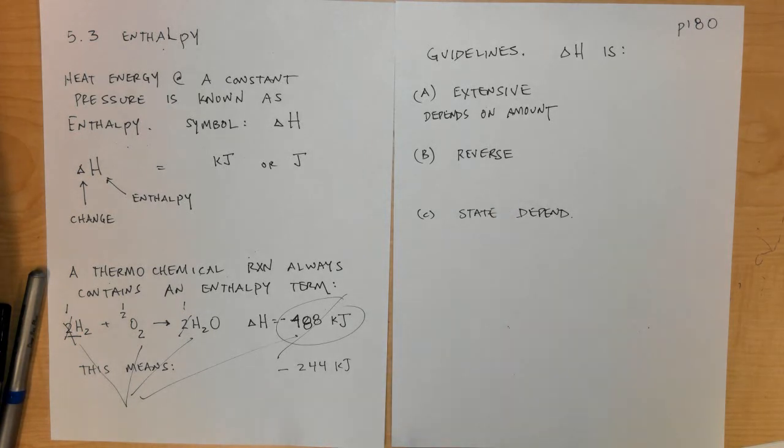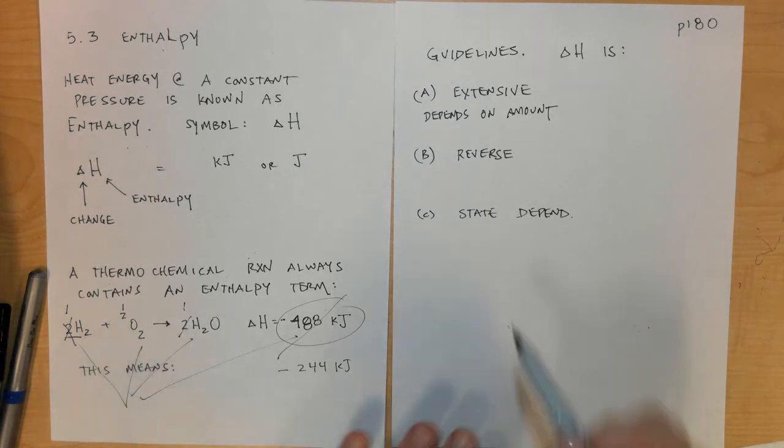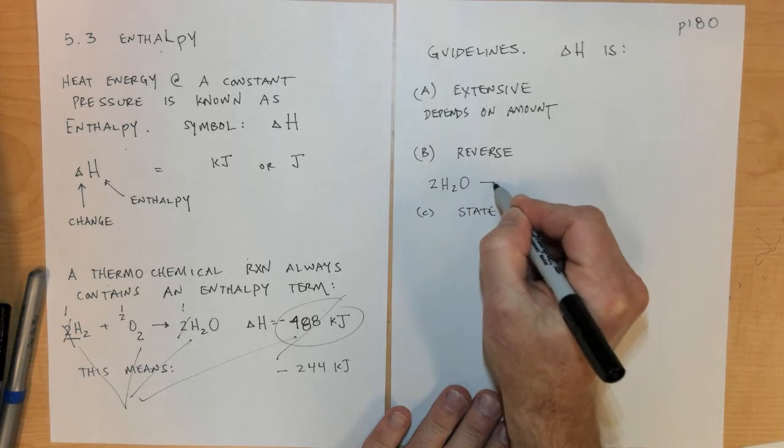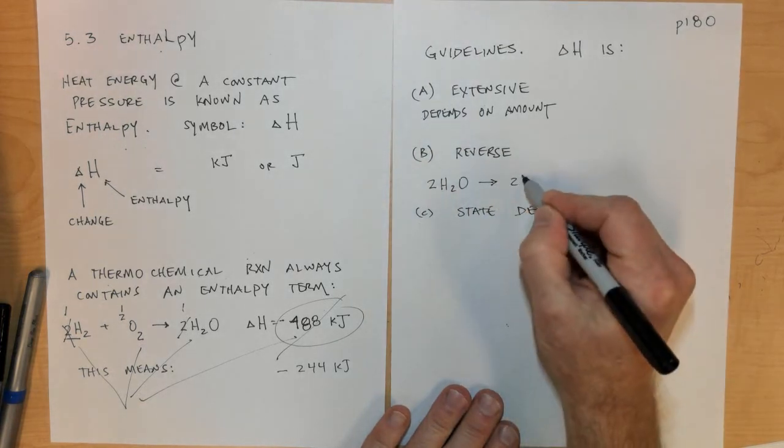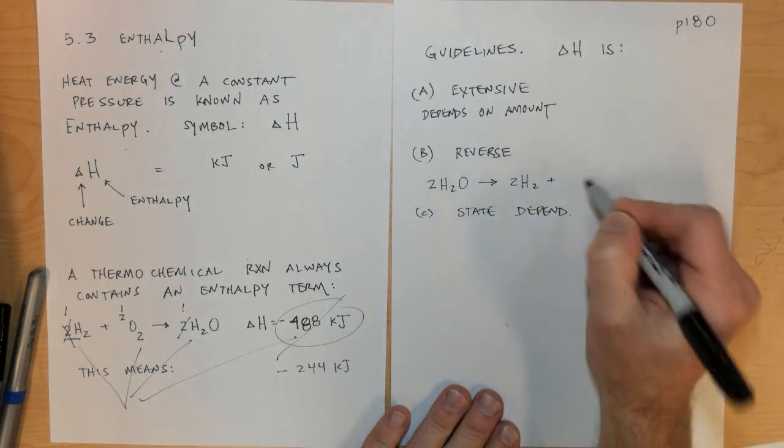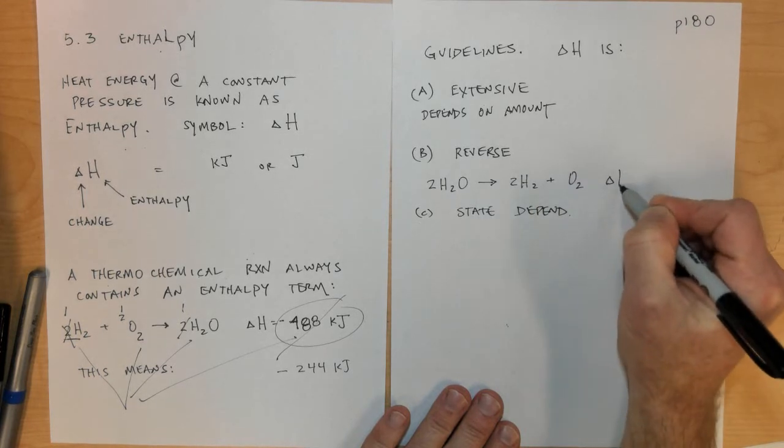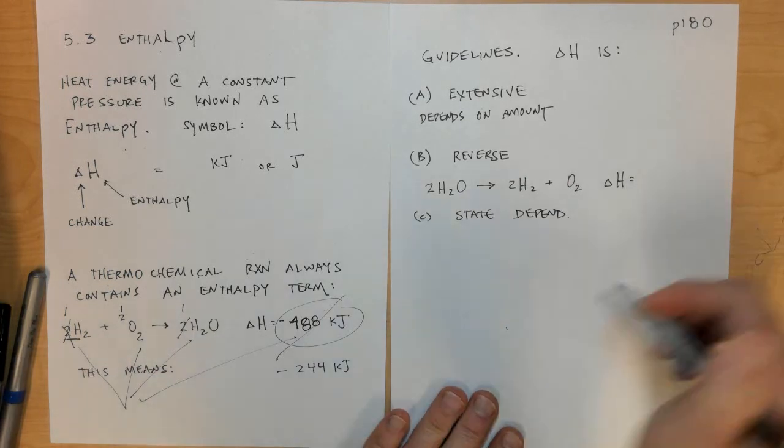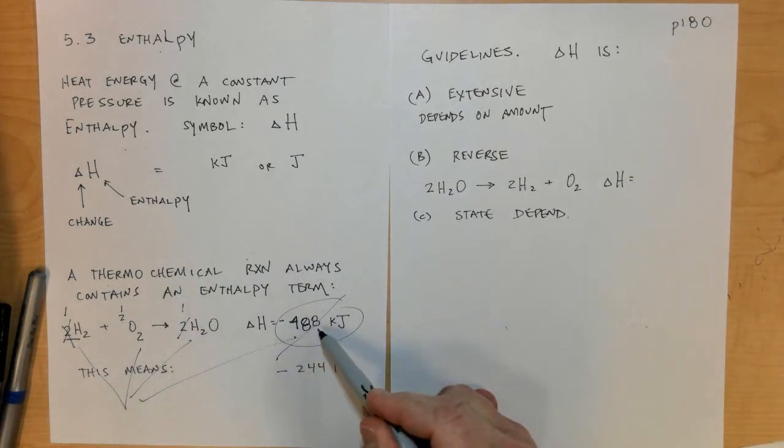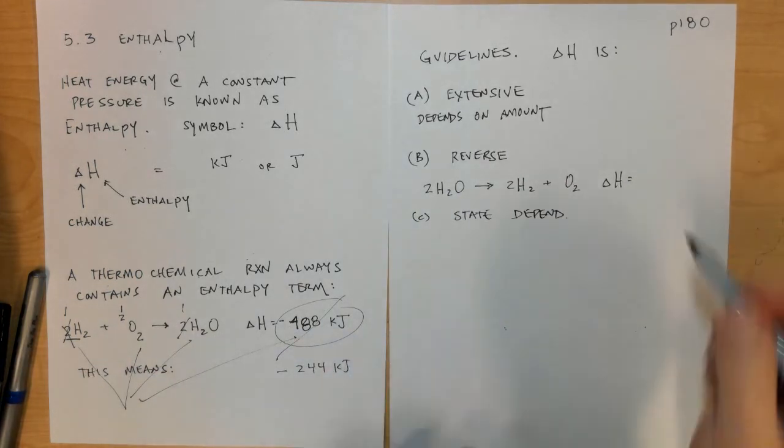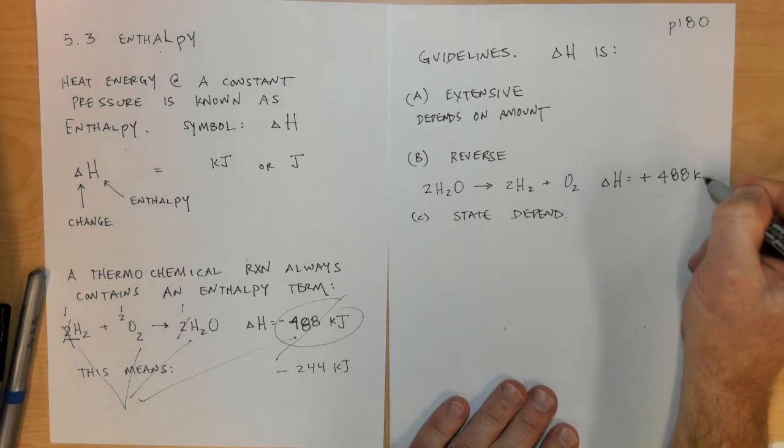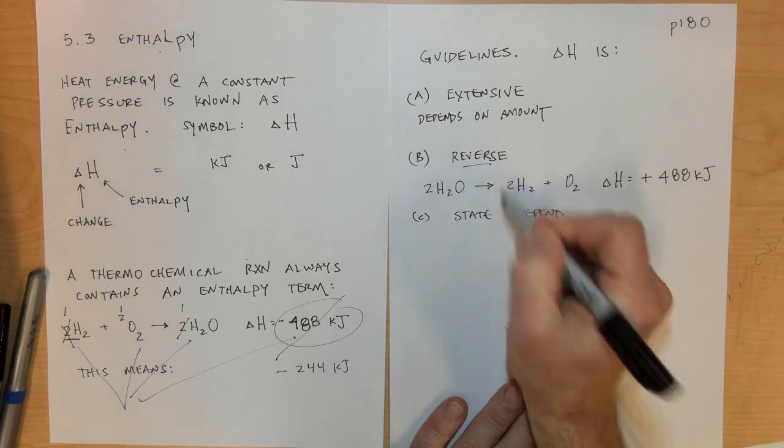Enthalpy for a process is reversible, meaning if we take this reaction and write it the other way, 2H2O goes to become 2H2 plus O2, the enthalpy now would be exactly the opposite. Instead of negative 488, it would be positive 488 kilojoules.